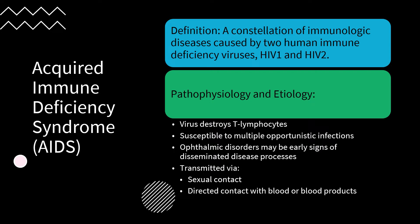HIV may be transmitted through sexual contact, through direct contact with contaminated blood or blood products, or via the placenta from the mother to an unborn child.